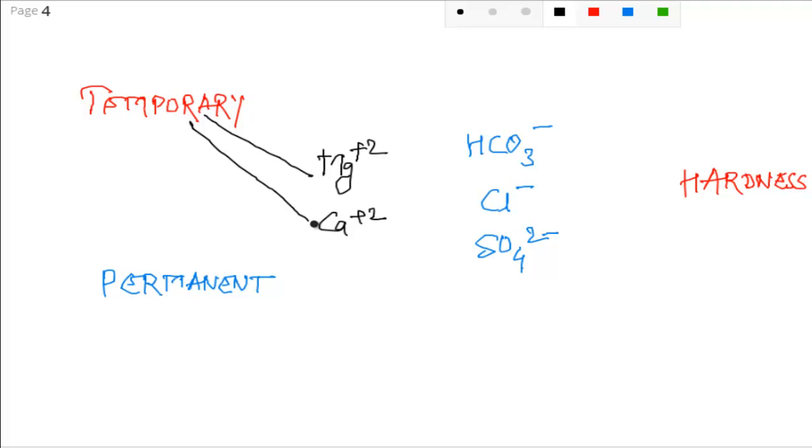Temporary hardness is basically both magnesium and calcium hydrogen carbonate. And that is your temporary hardness.